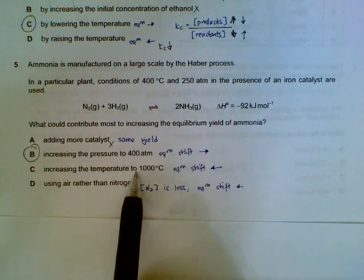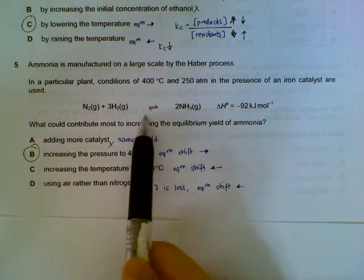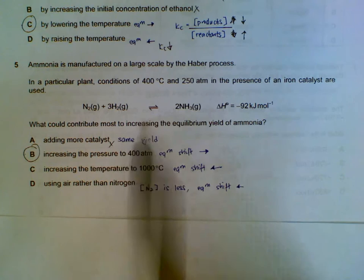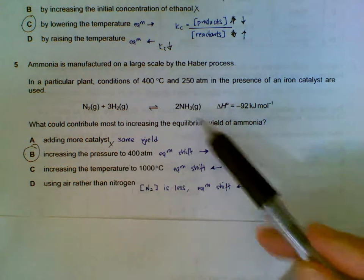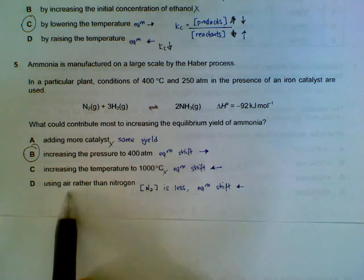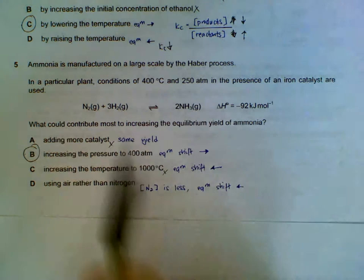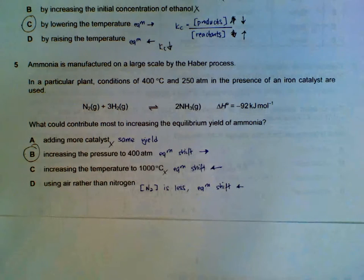Increasing temperature, it will shift to the side where it is endothermic direction. The forward direction is exothermic, it will shift to the left side endothermic. So increasing the temperature will decrease the yield of ammonia. If we use air rather than nitrogen, in other words, we will get less concentrated nitrogen rather than using pure nitrogen. So when the concentration of nitrogen decreases, we will get the equilibrium shifting to the left side.